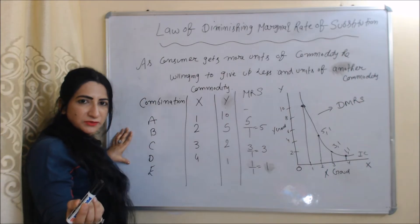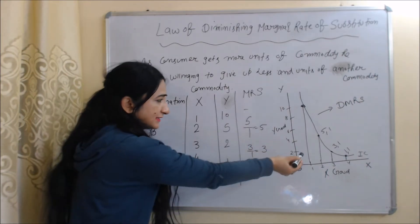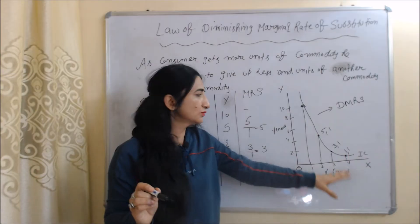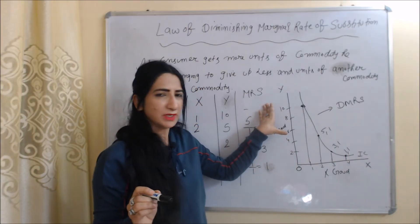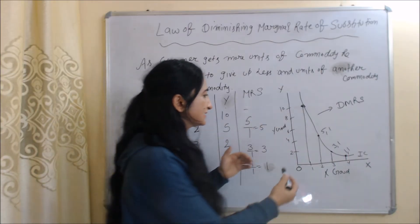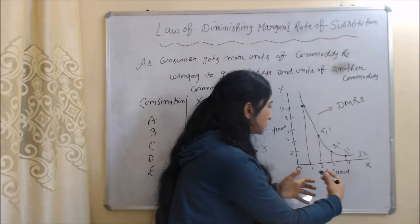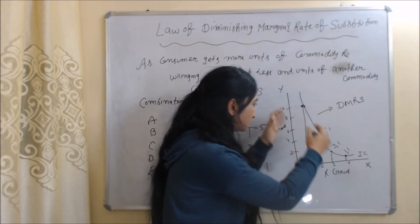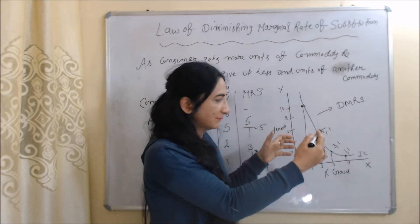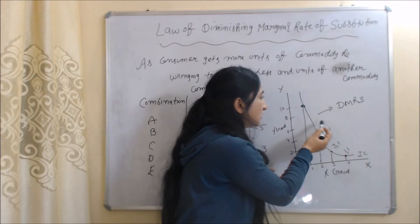You can see the same thing in this diagram. On the X-axis we have good X and on the Y-axis we have good Y. As the consumer increases more and more units of X, they are willing to give up fewer units of Y. The slope of the indifference curve illustrates this diminishing marginal rate of substitution.